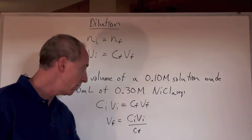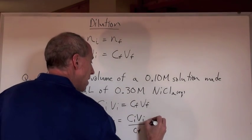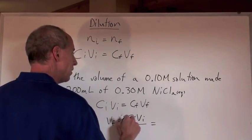So if you divide this side by Cf, Vf is isolated. And the formula is CiVi over Cf, right? So you write the formula, you manipulate the formula. And now on the same line, just plug in the numbers.